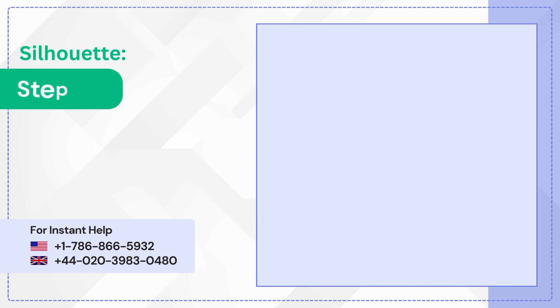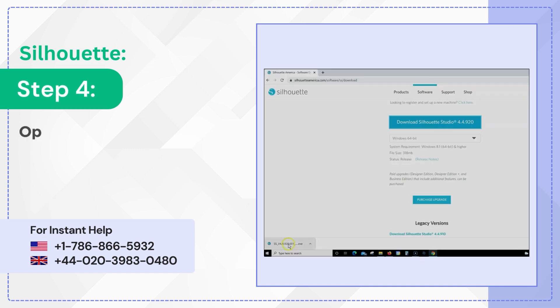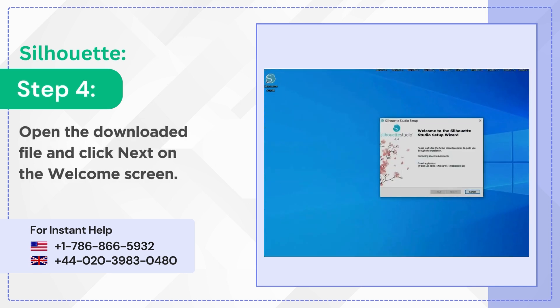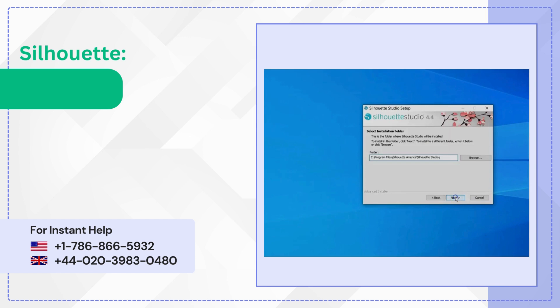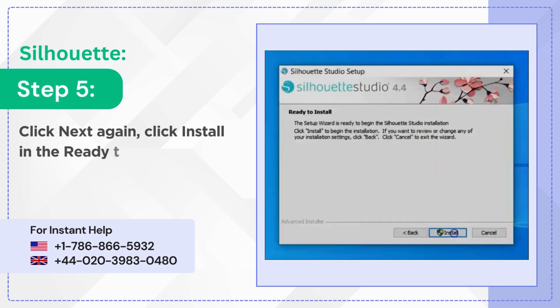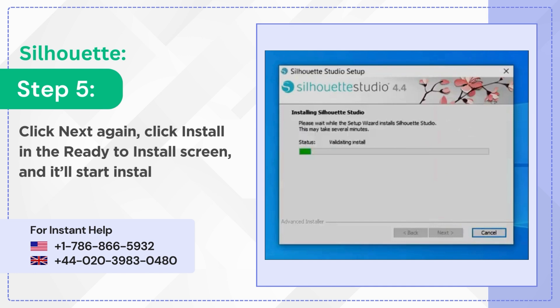Step 4: Open the downloaded file and click Next on the Welcome screen. Step 5: Click Next again, then click Install on the Ready to Install screen and it'll start installing.